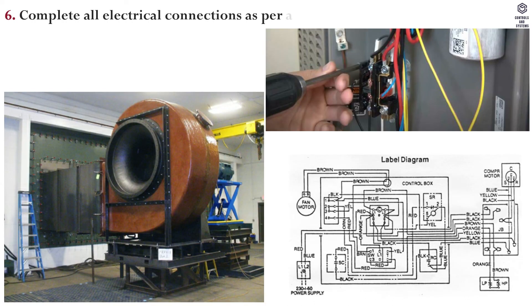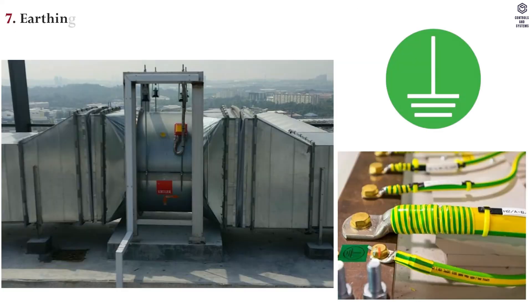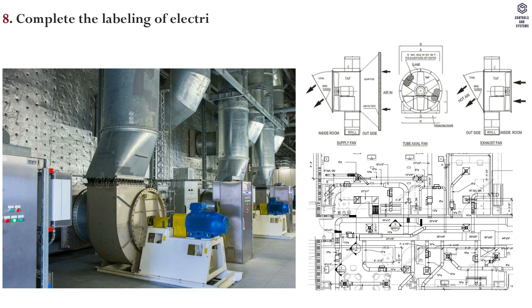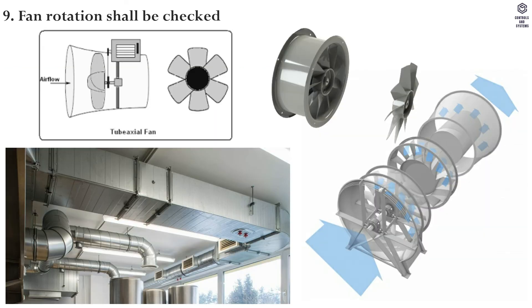6. Complete all electrical connections as per approved electrical drawing and manufacturer's terminal diagram. 7. Earthing shall be provided as per requirements. 8. Complete the labeling of electrical connections as per schematic drawings. 9. Fan rotation shall be checked before duct connection.